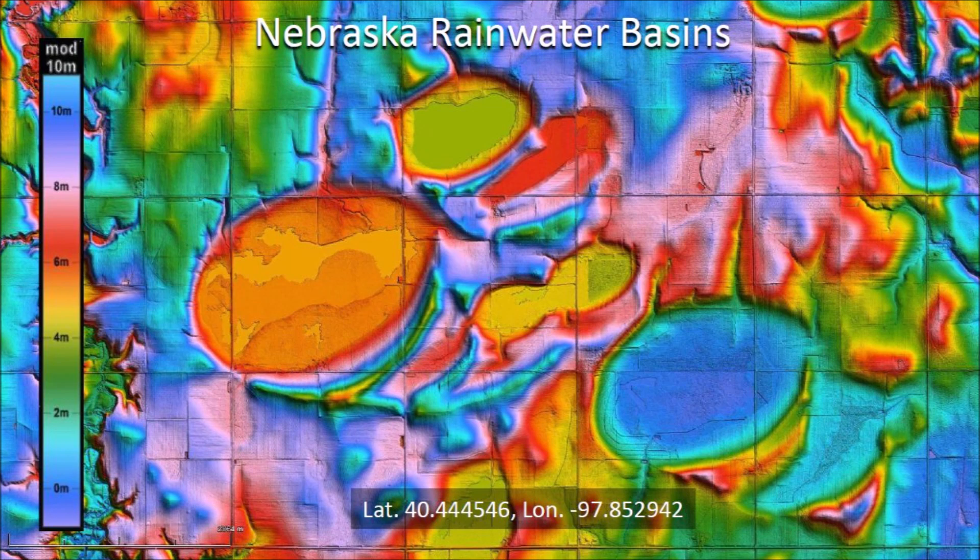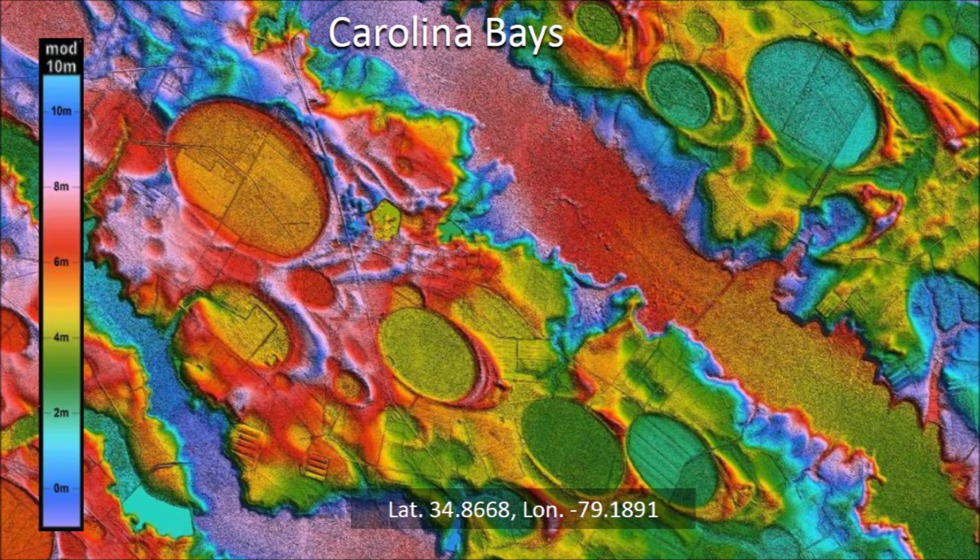The Nebraska Rainwater Basins were discovered in the 1990s using digital orthophoto quadrangles, a technology that preceded LiDAR. Notice that all these basins are oriented in the northeast to southwest direction. This is a LiDAR image of Carolina Bays near Fayetteville, North Carolina. Notice that they are all oriented from the northwest to the southeast, almost perpendicular to the orientation of the Nebraska Rainwater Basins.